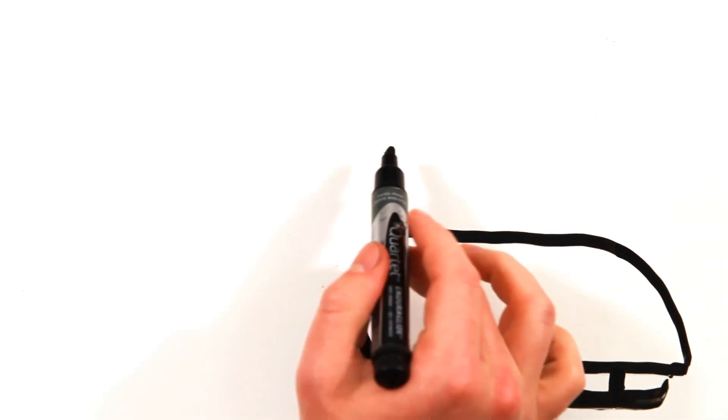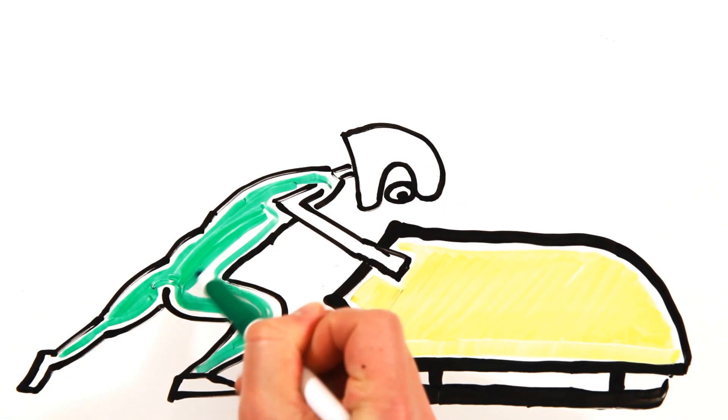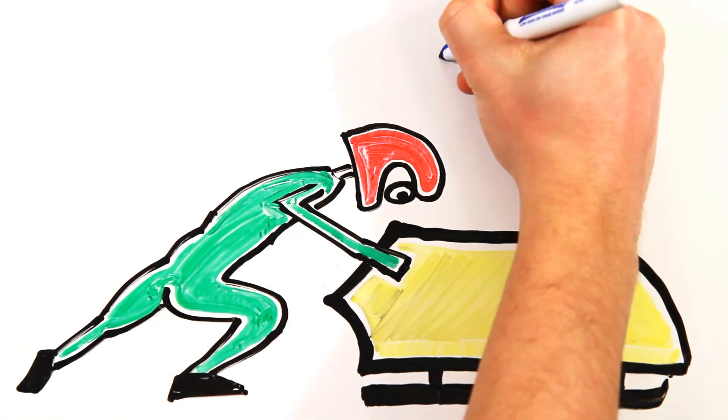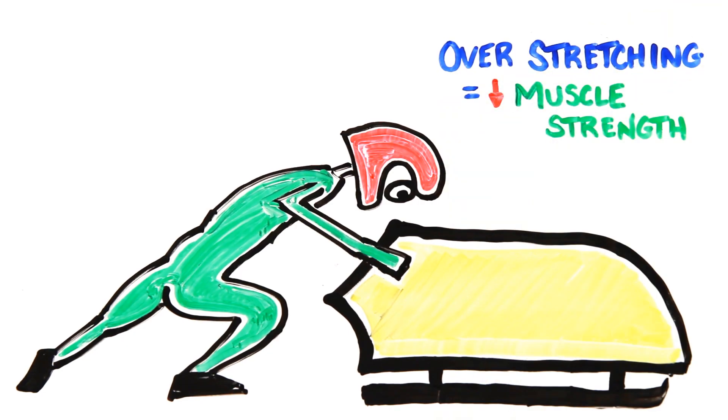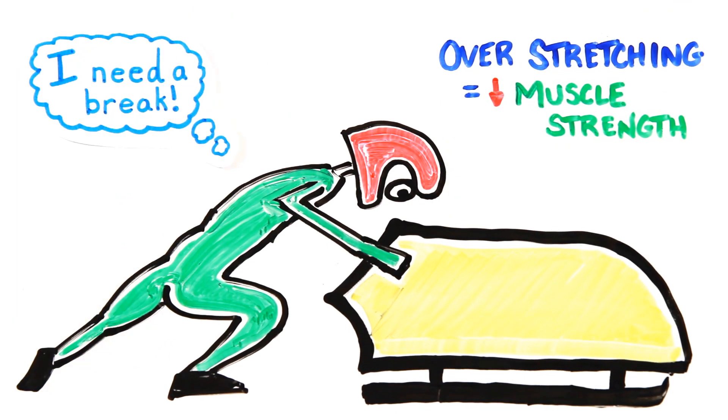But for power sports like speed skating and bobsledding, too much stretching may actually cause a temporary decrease in muscle strength. The overstretched muscle becomes less responsive and can stay weakened for up to 30 minutes.